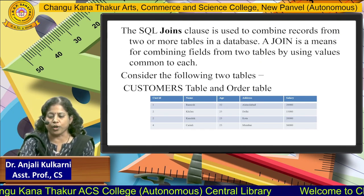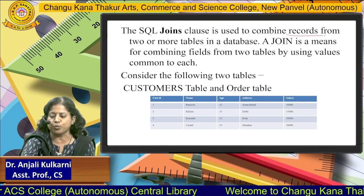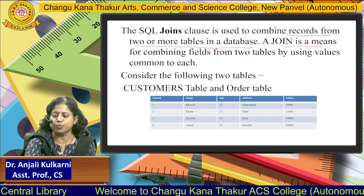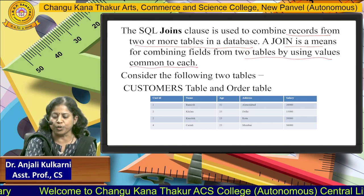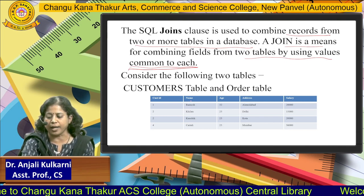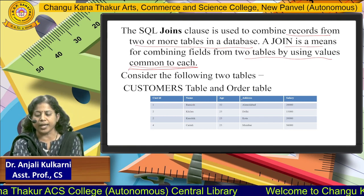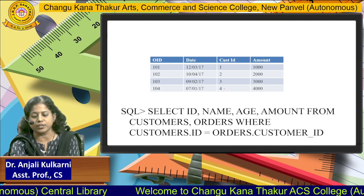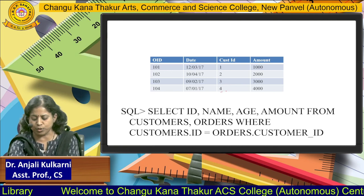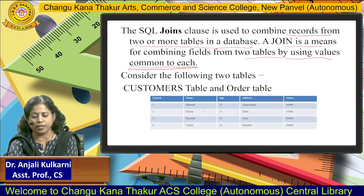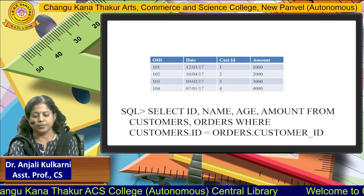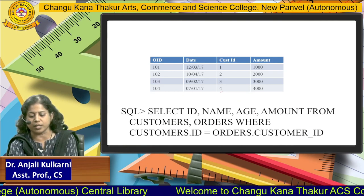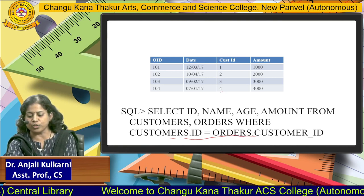Next is SQL join. A join is used to combine records from two or more tables in a database by using values common to each. Consider a customer table with columns customer ID, name, age, address, and salary, and an order table with OID, date, customer ID, and amount. Customer ID is common to both tables. The query selects ID, name, age, and amount from both tables where customer.ID equals orders.customerID.